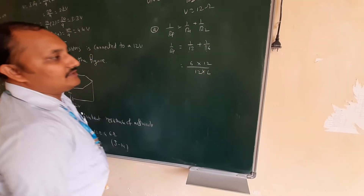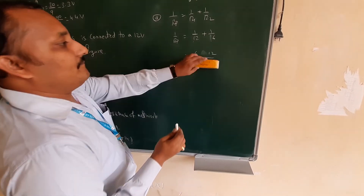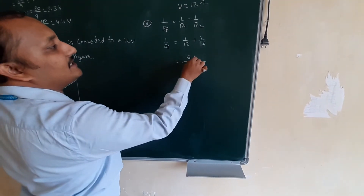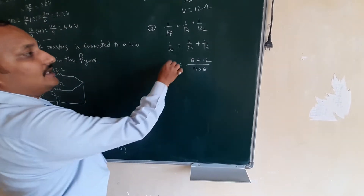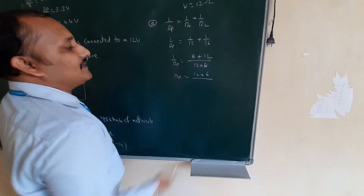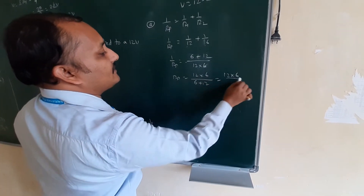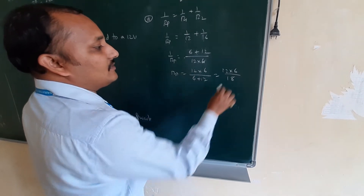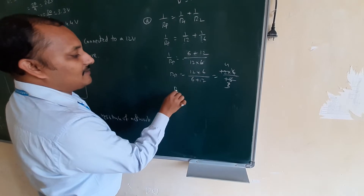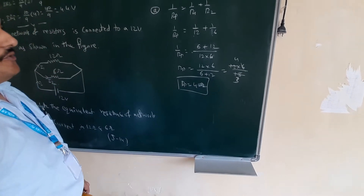So 1/Rp = (6 + 12)/(12 × 6). Therefore Rp = (12 × 6)/(6 + 12) = 72/18. Simplifying, 6 cancels into 18 three times and into 12 four times — wait, 72/18 = 4. Therefore Rp = 4 ohms.